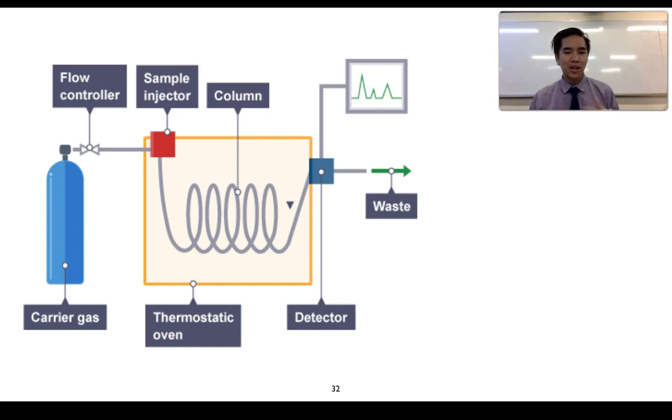Eventually the components will be eluted or they will escape through past the column and reach a detector, which will determine the time at which a component exits the column and also helps us determine the relative proportion of it present.